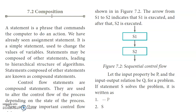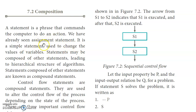Composition is mainly used for compound statements. A statement is an instruction to the computer to do an action — an instruction or command on the computer that performs some action. For example, we already have the assignment statement, which is a simple statement used to change the values of variables. For example, if a equals 5, the value 5 is assigned to the variable a.